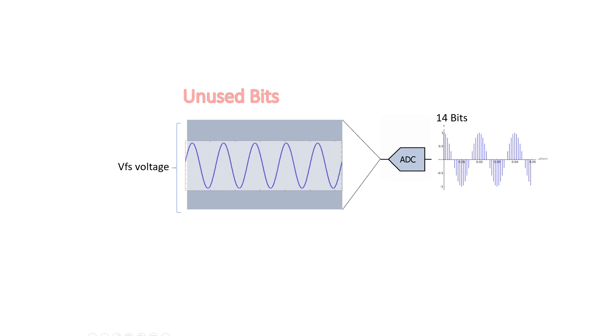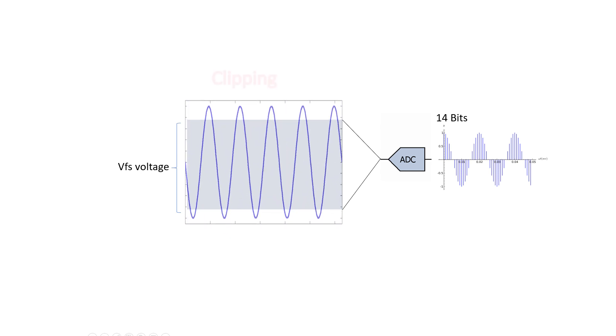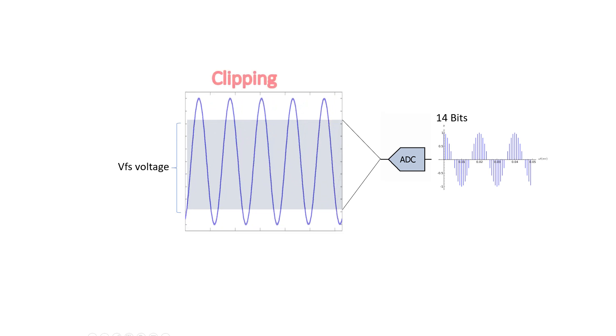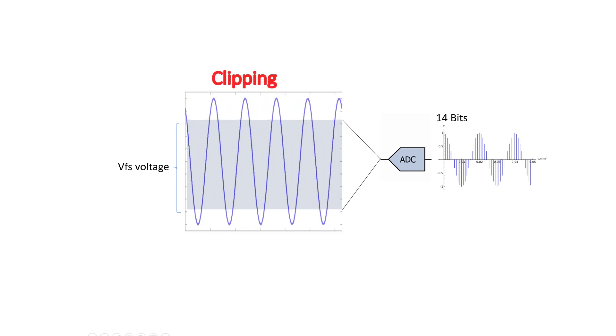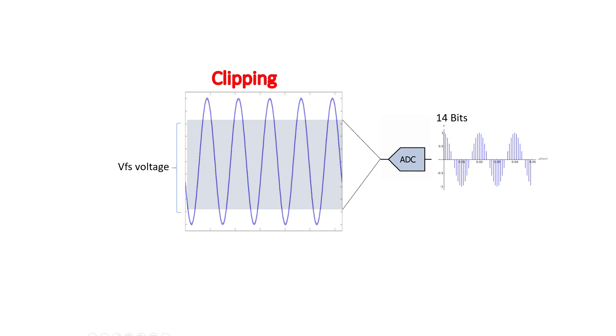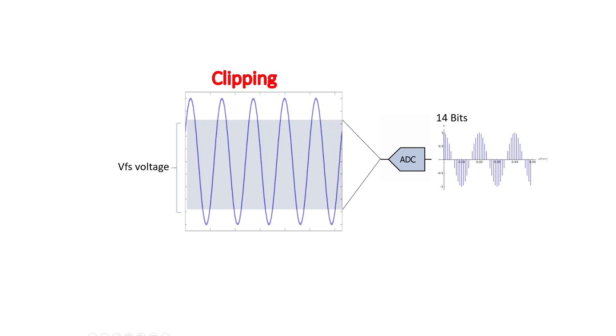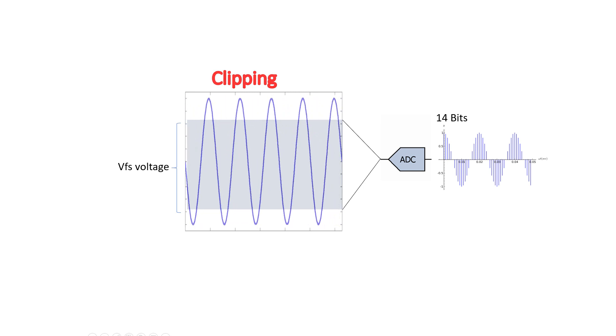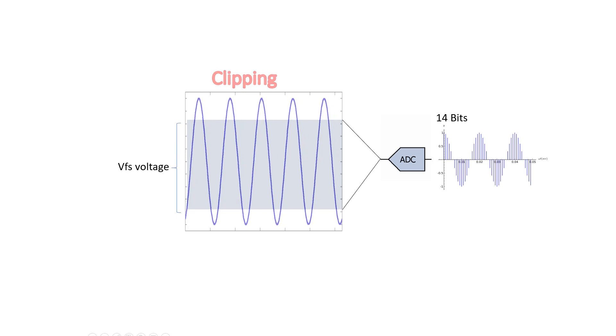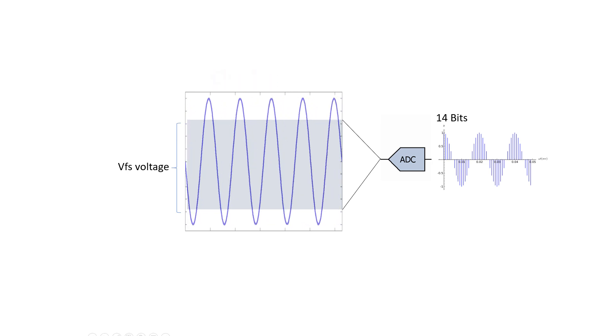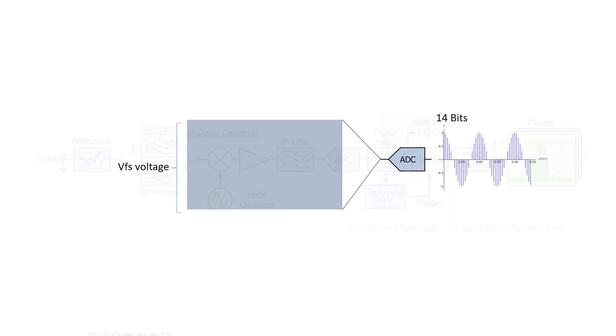If the input signal amplitude is more than the ADC V full scale voltage VFS, then ADC will clip the signal because it does not have any bits to represent the higher voltage levels. When clipping happens, there is a high chance of getting wrong results.